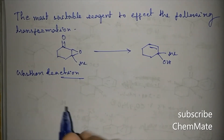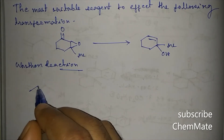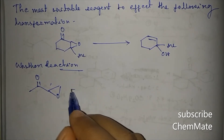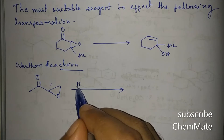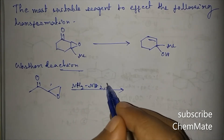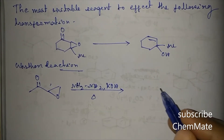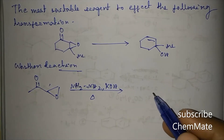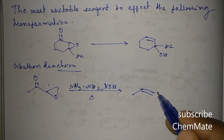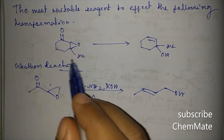In the Wharton reaction, an alpha-beta epoxy ketone is treated with hydrazine (NH2NH2) in the presence of a base — sometimes water itself acts as a base — under heating conditions. The product formed is an allylic alcohol.